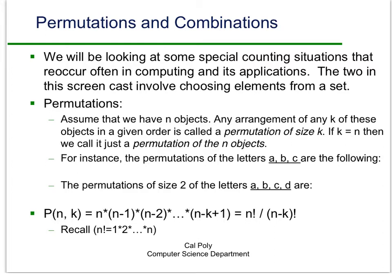So for example, let's suppose we have permutations of letters a, b, and c. That's three different things, and we want to look at all possible arrangements. So what arrangements can we get? Well,